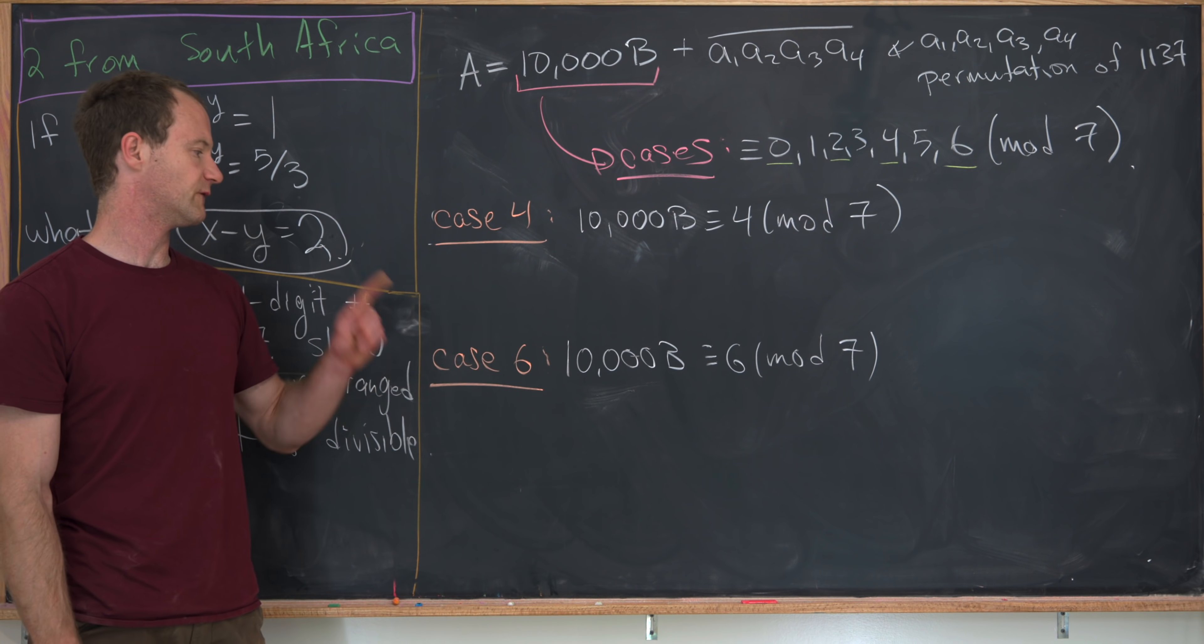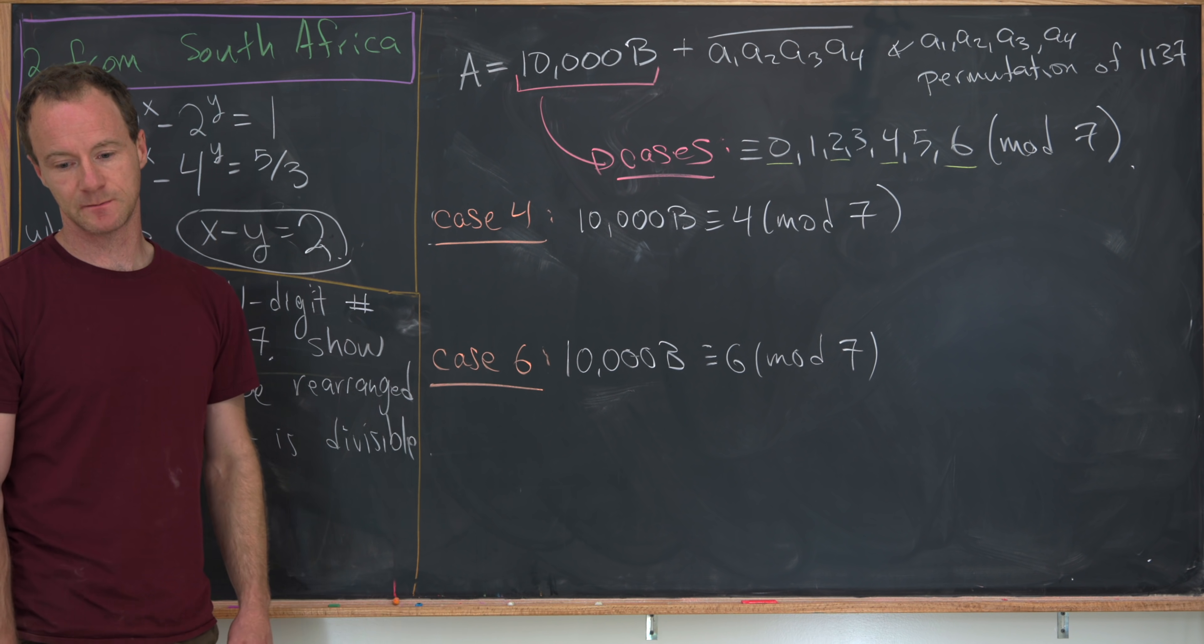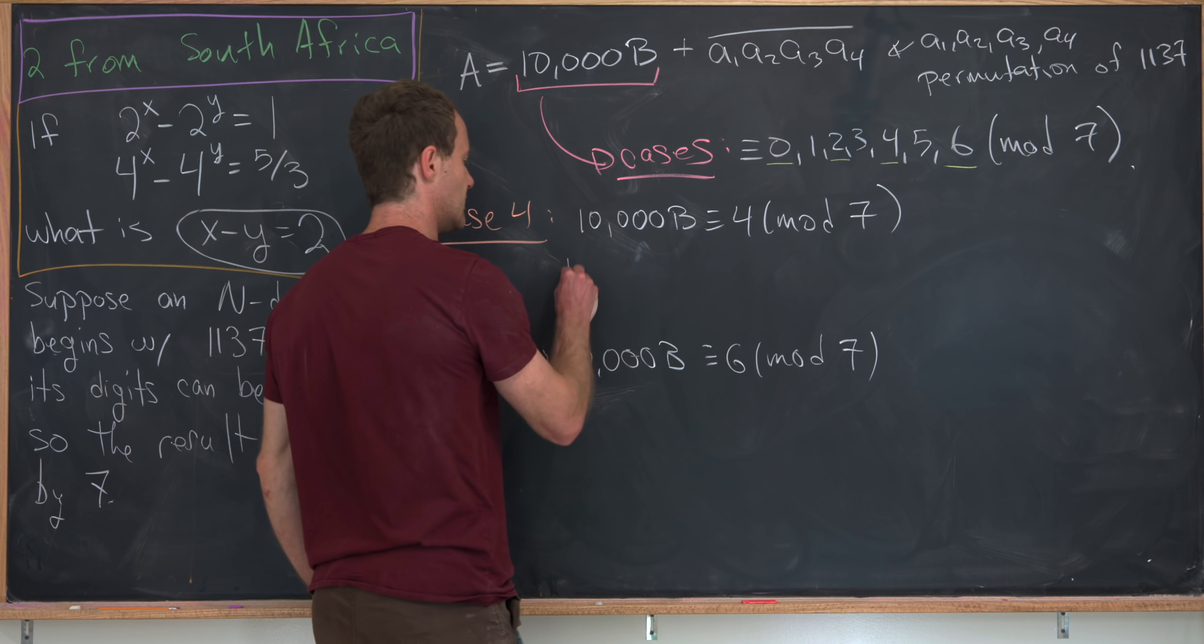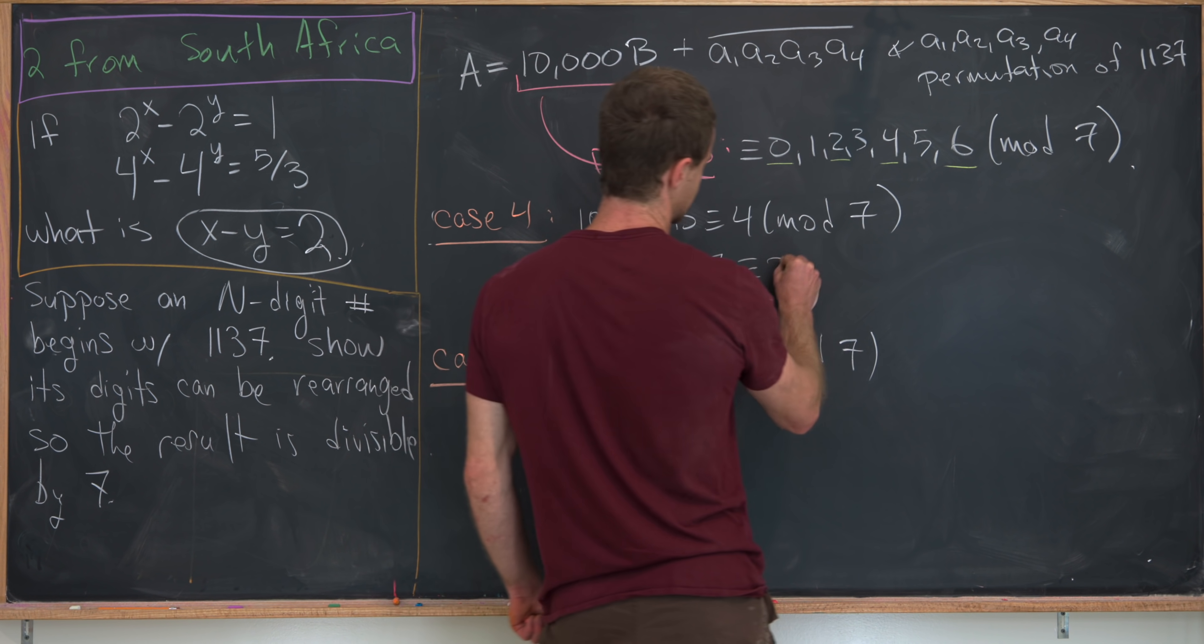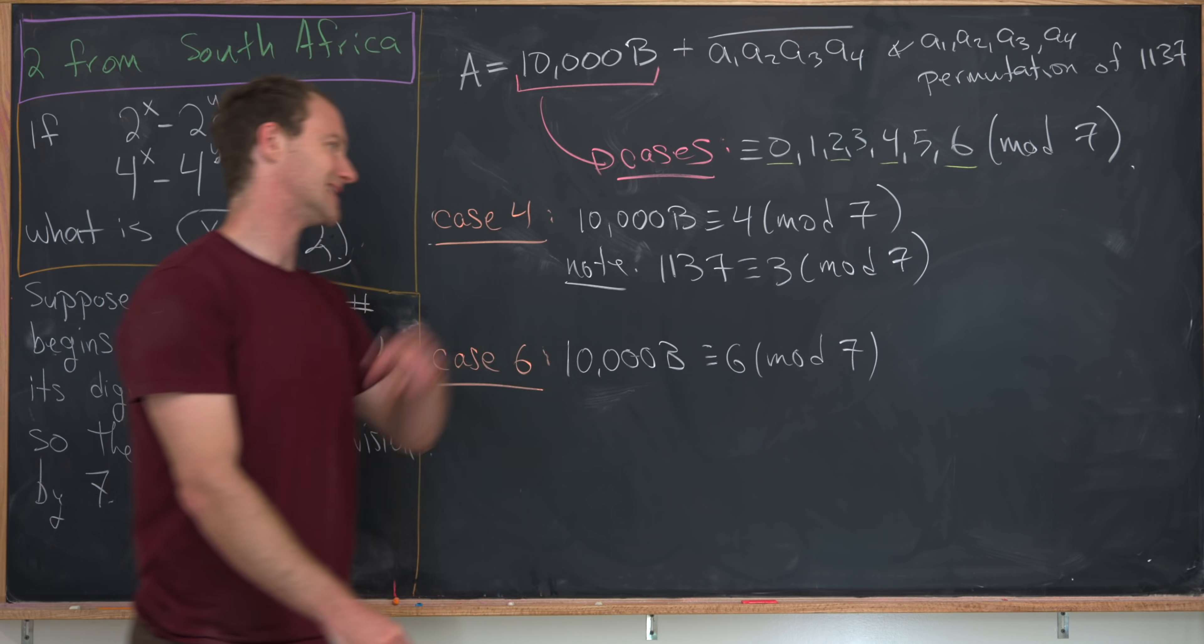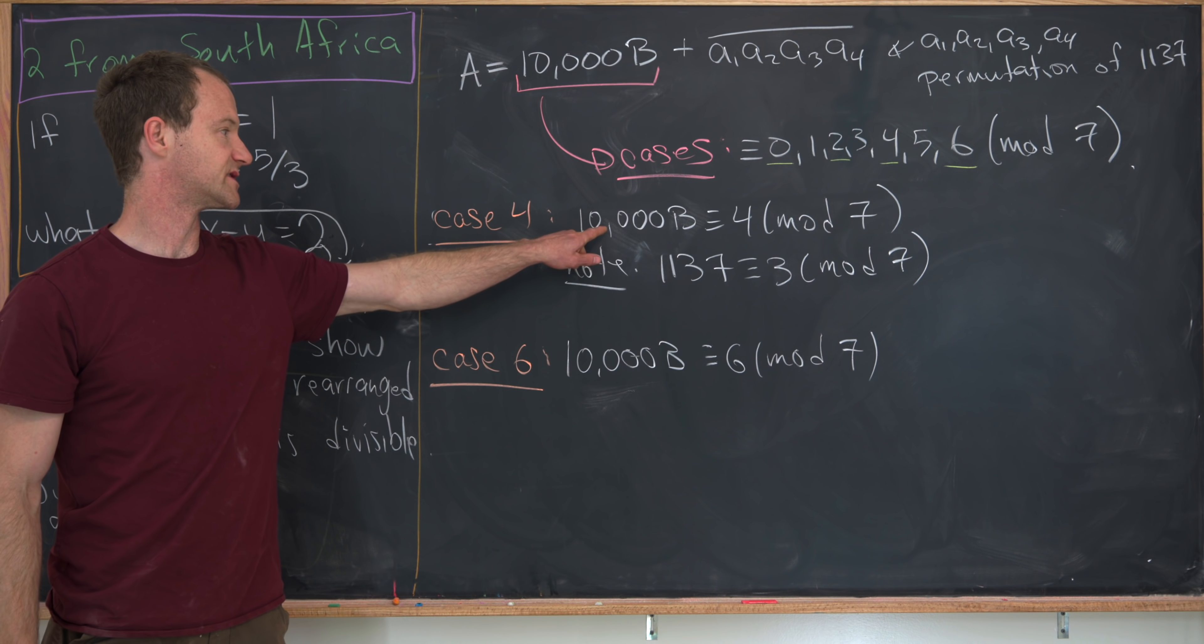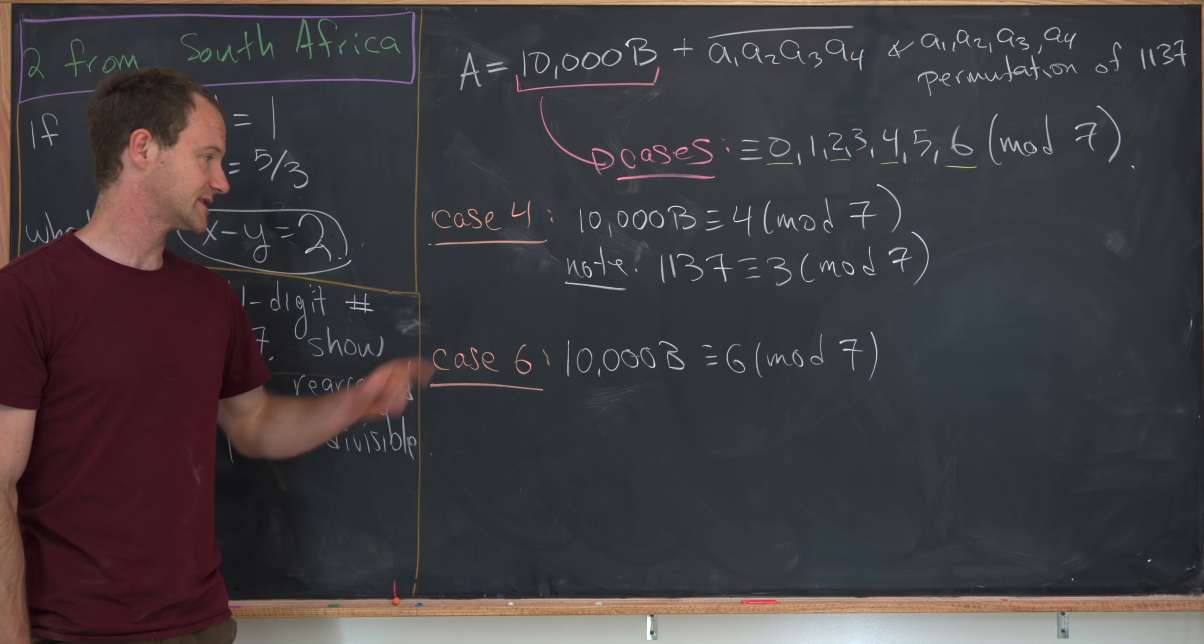So let's maybe get rid of these two cases, and we'll do the last two. Okay, so to finish this off, we'll look at the fourth case and the sixth case. So the fourth case is when 10,000 b is congruent to 4 mod 7, which means we need the rest of the stuff to be congruent to 3 mod 7. Again, by trial and error, you can notice that 1, 1, 3, 7 is congruent to 3 mod 7. So that means that our number, which is the sum of this and this, will be congruent to 4 plus 3 mod 7 or 0 mod 7.